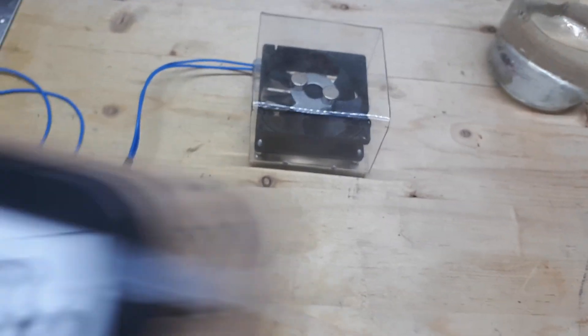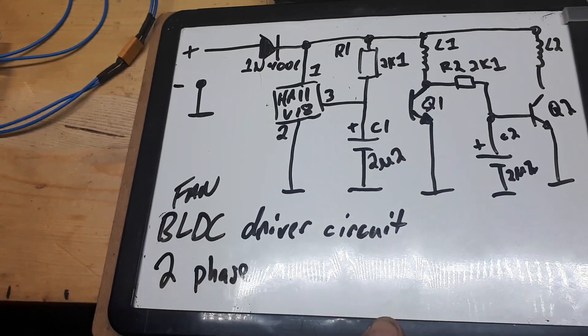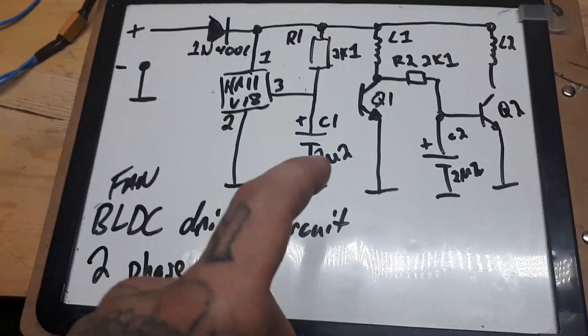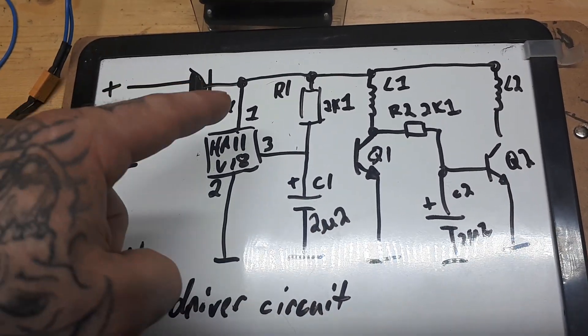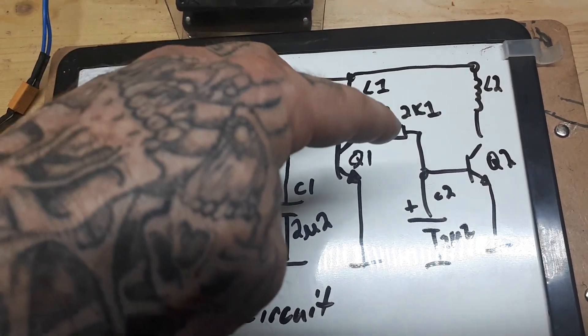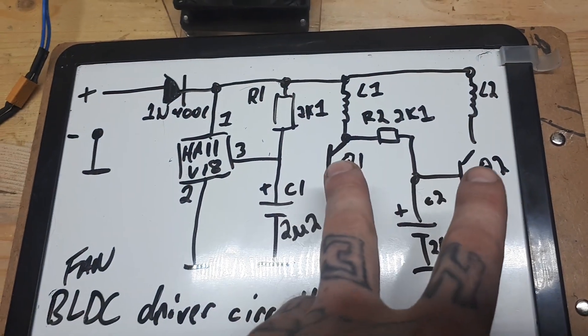And if you're interested in the circuit, here's the drive circuit for this two phase motor, the fan motors, what's in there. You got your diode hall effect sensor, a couple of resistors, a couple of coils, and then a couple of transistors.